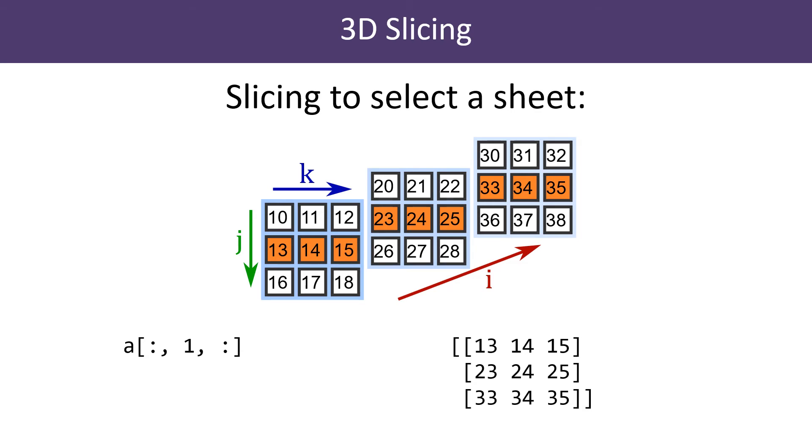Since we have indexed one dimension, the resulting array is a 2D array. Of course we could apply the same technique to a different dimension, to select a sheet in a different orientation.